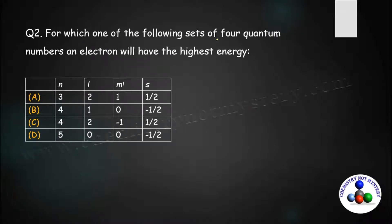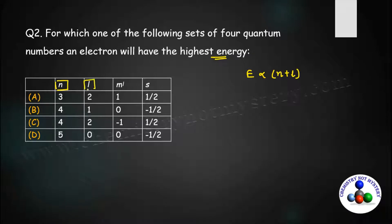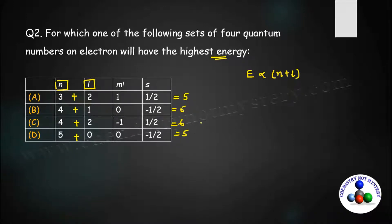Next question: for which set of 4 quantum numbers will an electron have the highest energy? We know energy is directly proportional to the n plus l value, so focus on the principal and azimuthal quantum numbers. For the first set, n plus l equals 5; for the second set, also 5; for the third set, it equals 6; and for the fourth set, also 5. The maximum n plus l is in the third set, so option C has the highest energy and is the right answer.